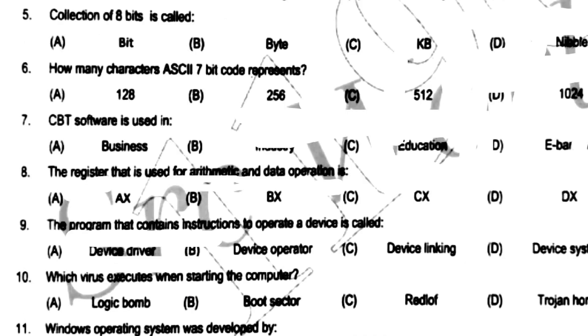Collection of 8 bits is called a byte. How many characters does ASCII 7-bit code represent? The write option is 128.